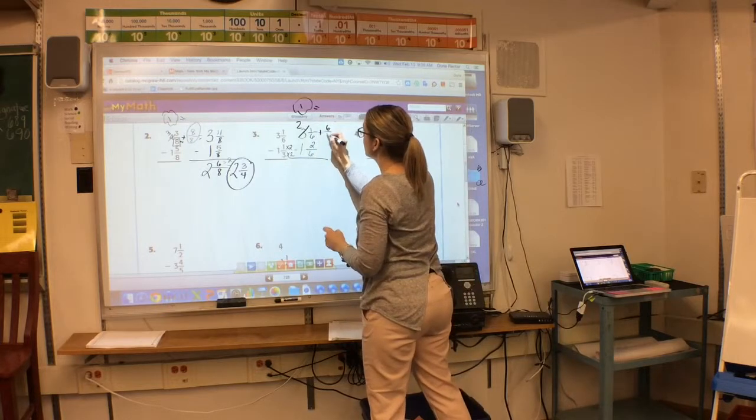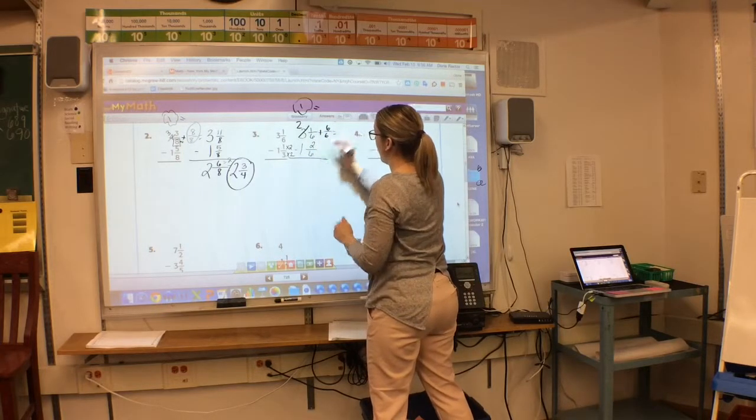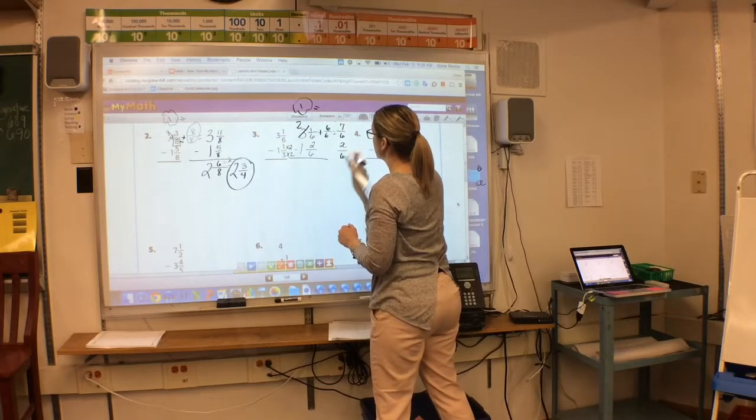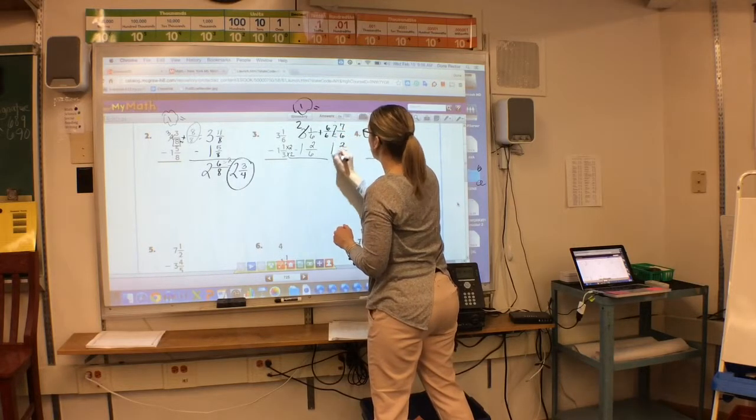I look here. I get 6, 6. I'm going to add it. 7, 6, 2, 6. I'm going to bring all my whole numbers over.